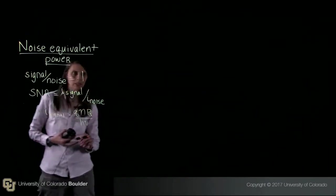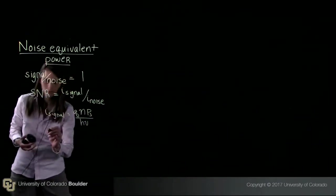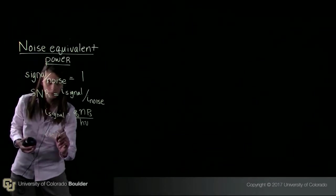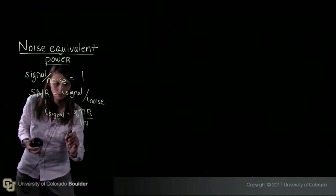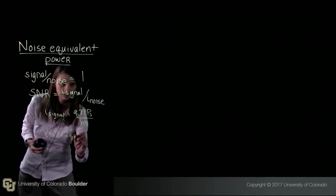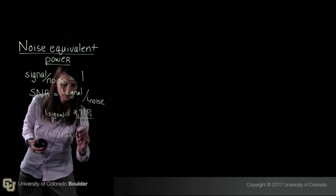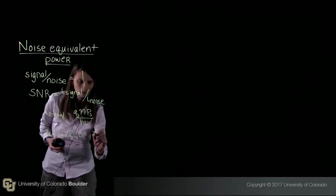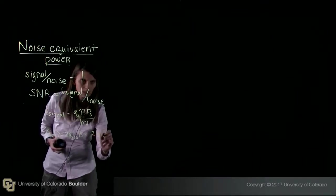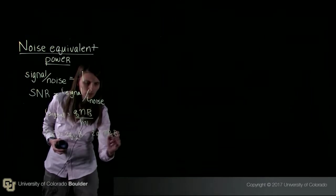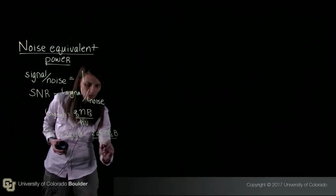We can also write down an expression for the mean square noise current. So if I write down IN squared, what I get is I get Q squared 2QI sub S times bandwidth. Or if I want, I can write this as 2Q squared eta P sub S bandwidth over H nu.